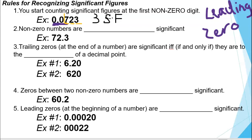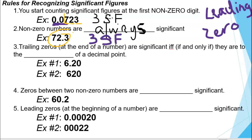Rule number two says that non-zero numbers are always significant — always significant. Regardless of where they are in the line of numbers, they are always significant. Here we have 72.3 — all three of those digits are significant because they are non-zero numbers. So we have three significant figures here as well.